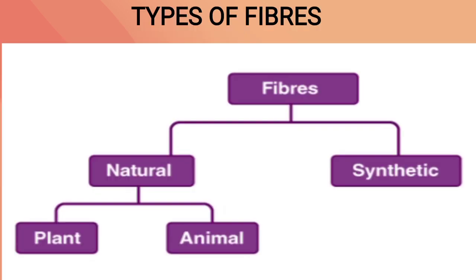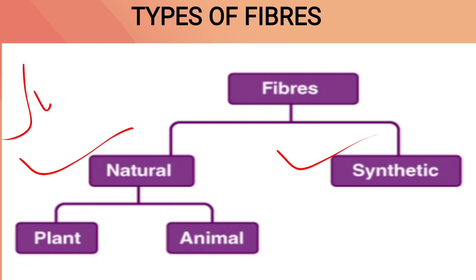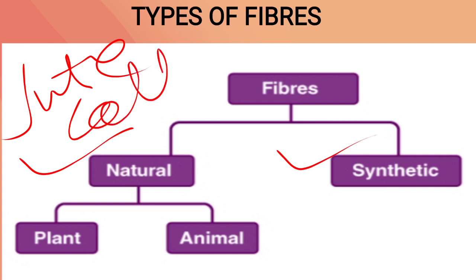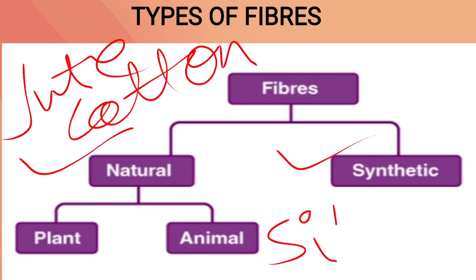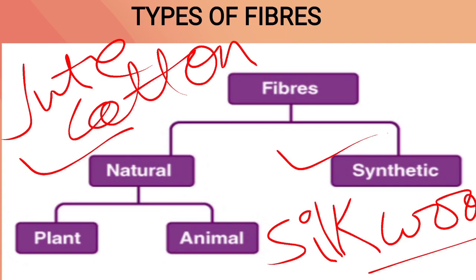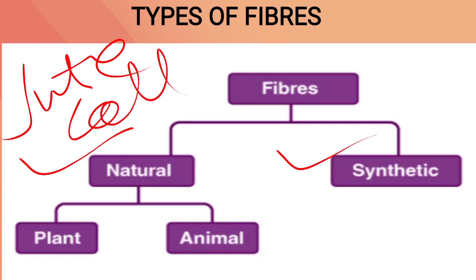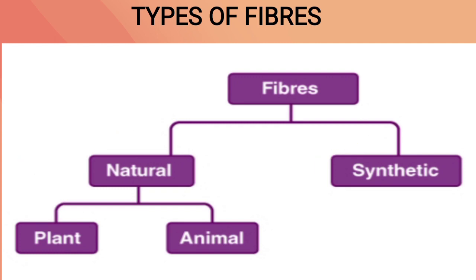Clothes are made up of different types of fiber. There are basically two types of fibers: natural and synthetic. Natural fibers are of two types — plant and animal. Plant fibers include jute and cotton. Animal fibers include silk and wool. Synthetic or man-made fibers include nylon, polyester, and rayon.